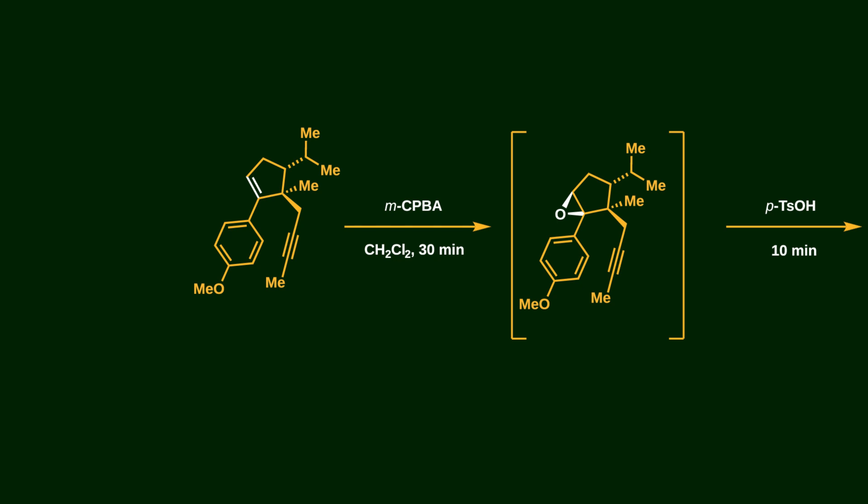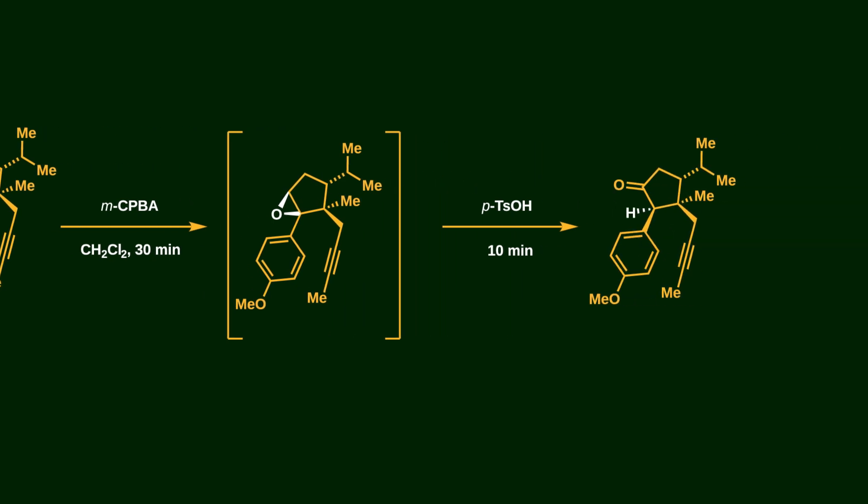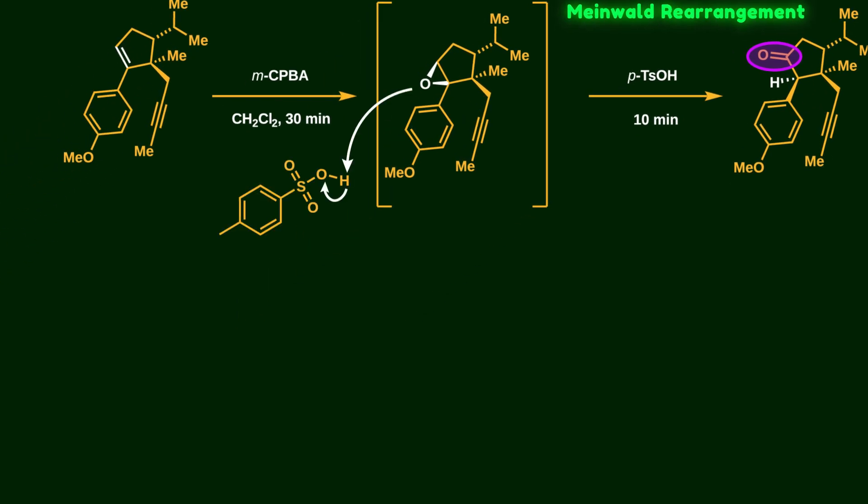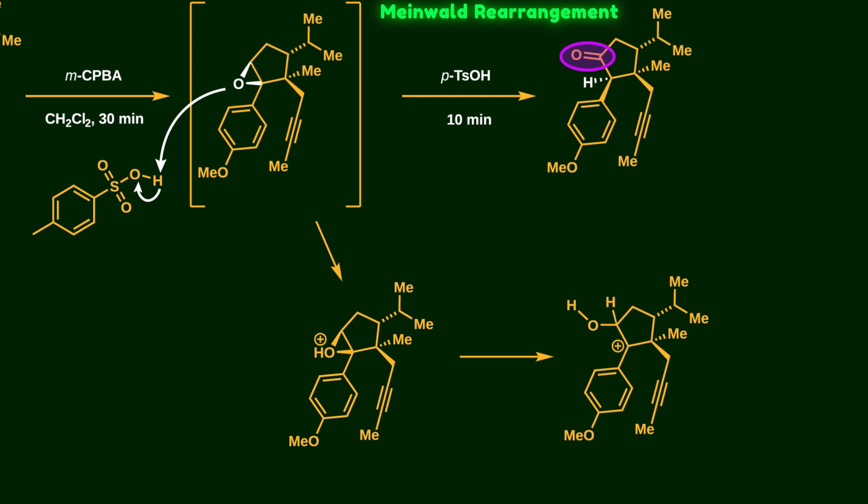Now the double bond undergoes epoxidation using mCPBA. After adding p-toluenesulfonic acid as a proton source, the ketone is introduced to the molecule through a Meinwald rearrangement.